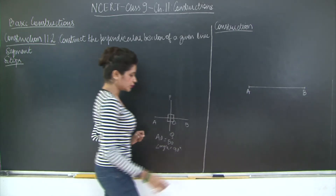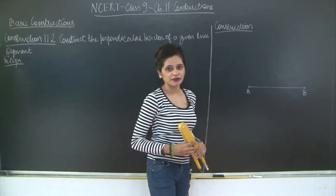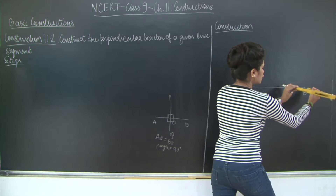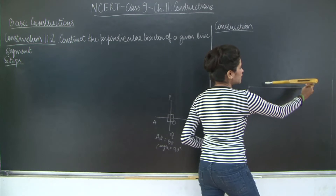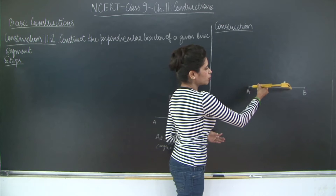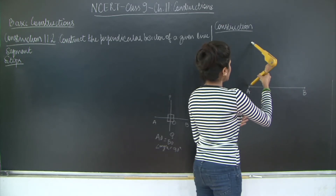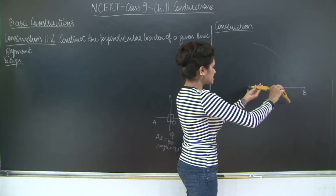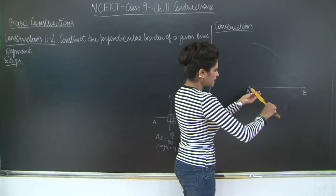So how will we do this? Very simple. You have your given line segment AB. You are going to take a length more than half the length of AB. As you can see, this length is more than half of the line segment AB. With A as the center, you are going to cut an arc on one side and cut an arc on the other side.